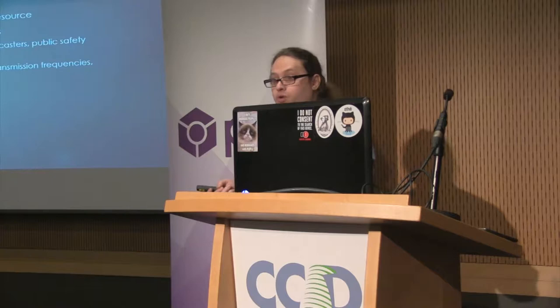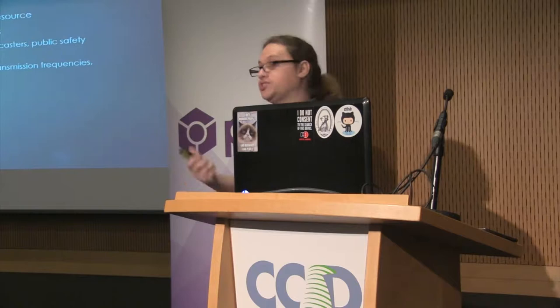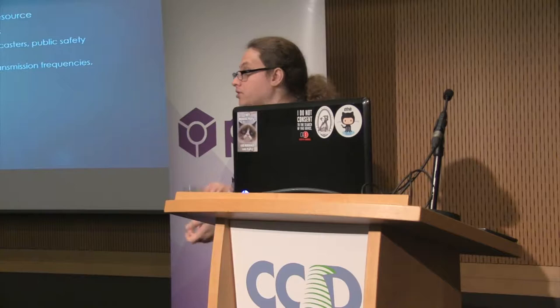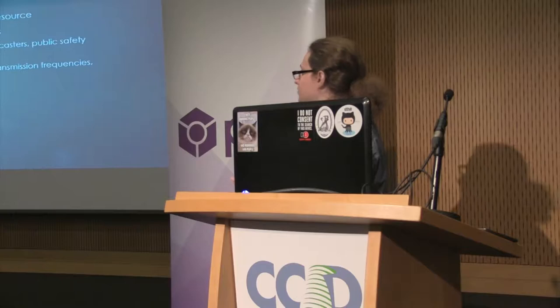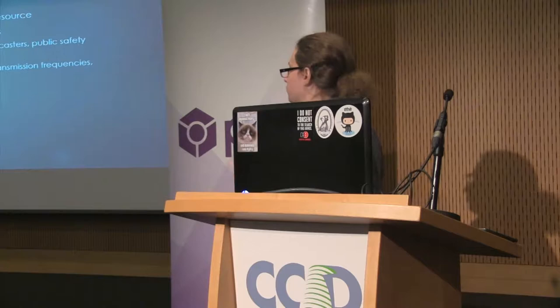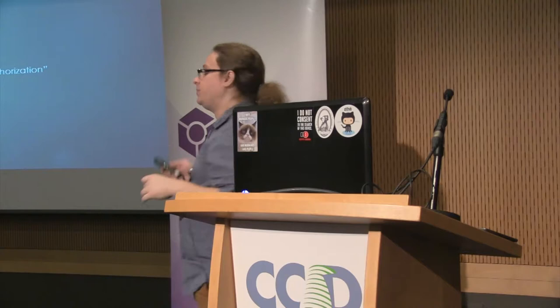For example, unlicensed users — when you use Wi-Fi, you're considered an unlicensed user because you don't personally have a license. You're allowed to do it, but you don't have a license. Amateur radio operators do have a license, as do broadcasters and public safety personnel. These privileges are related to modes of operation, power, and transmission frequencies — which is relevant to one of the issues with the NPRM.